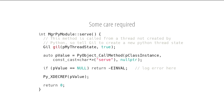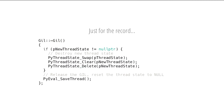The destructor of the GIL class, if a new thread state was created, will then swap back to the previous one and clear and delete the new one that was created. My PR for the sub-interpreters and the GIL class was actually merged at this point. Awesome.